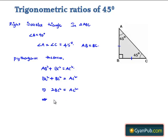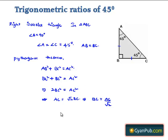If we take the square root on both sides, then we get AC is equal to root 2 times BC, which implies BC is equal to AC by root 2. Since AB is equal to BC, therefore AB will also be equal to AC by root 2.